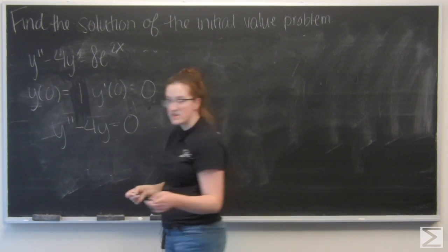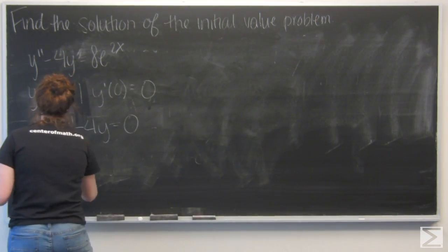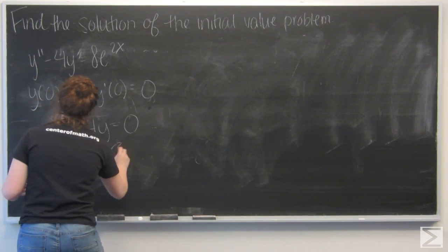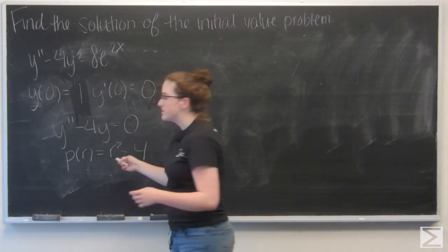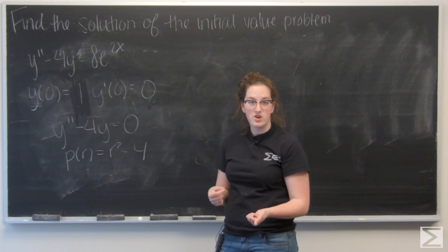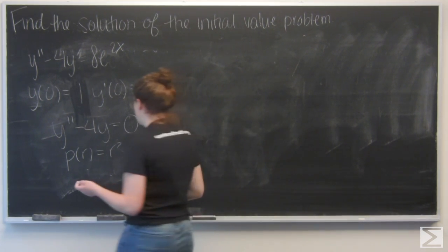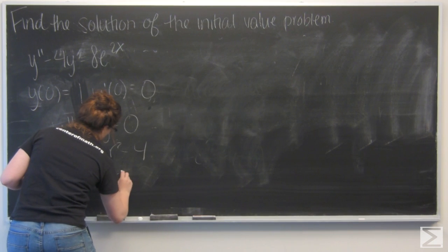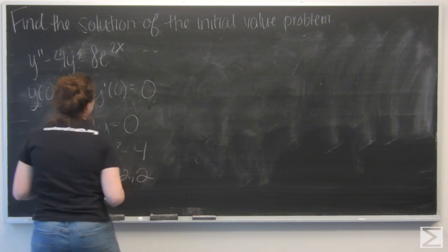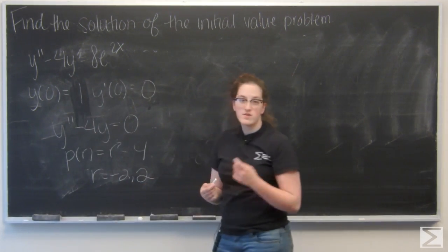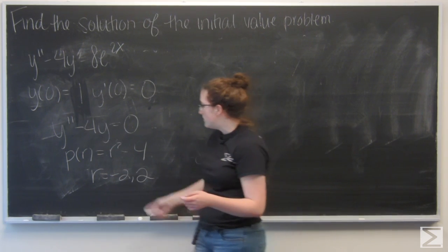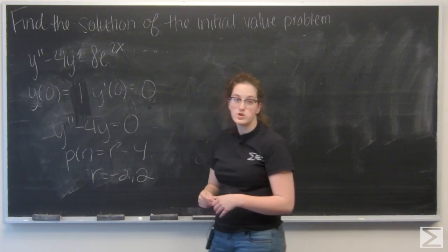I can write its characteristic equation, which is r squared minus 4. If I set that equal to 0, I can find its two real roots, which are plus and minus 2. So I know that yc is going to be a linear combination of e to the negative 2x and e to the 2x.